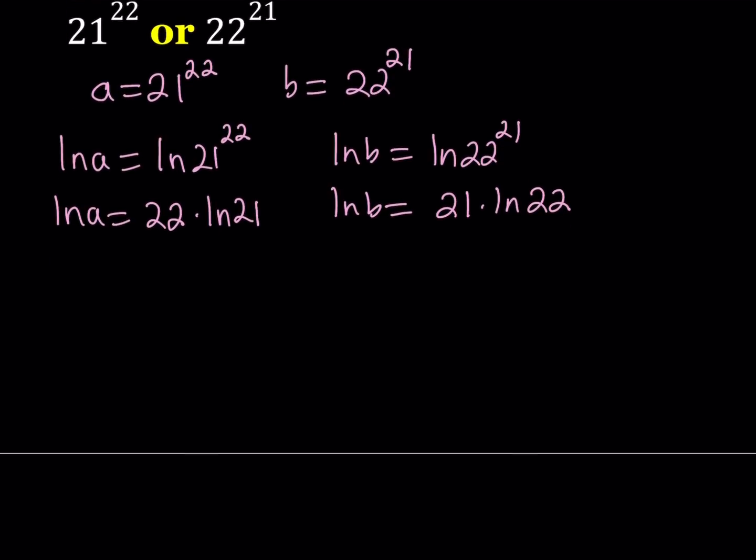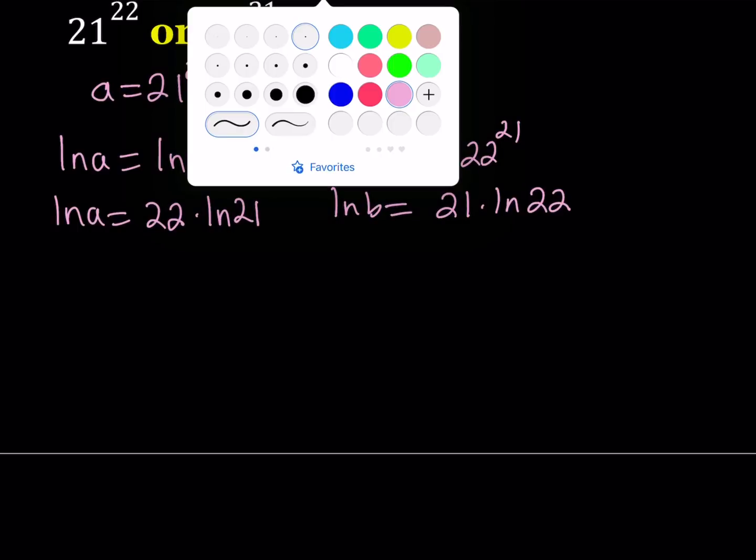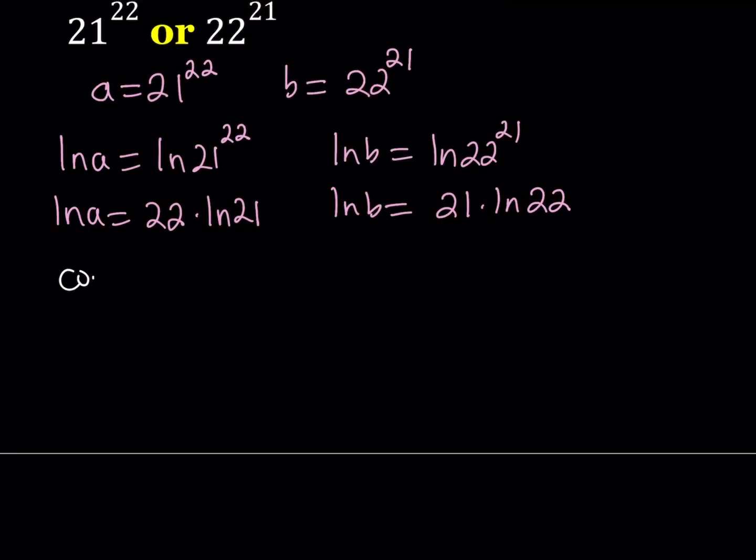So instead of comparing A and B, I'm going to be comparing ln A and ln B. Since these two quantities are not equal, one of them has to be greater than the other. So we're going to consider the following function next. Our function is going to be y equals ln x over x. Now you might be thinking, why am I considering this function?